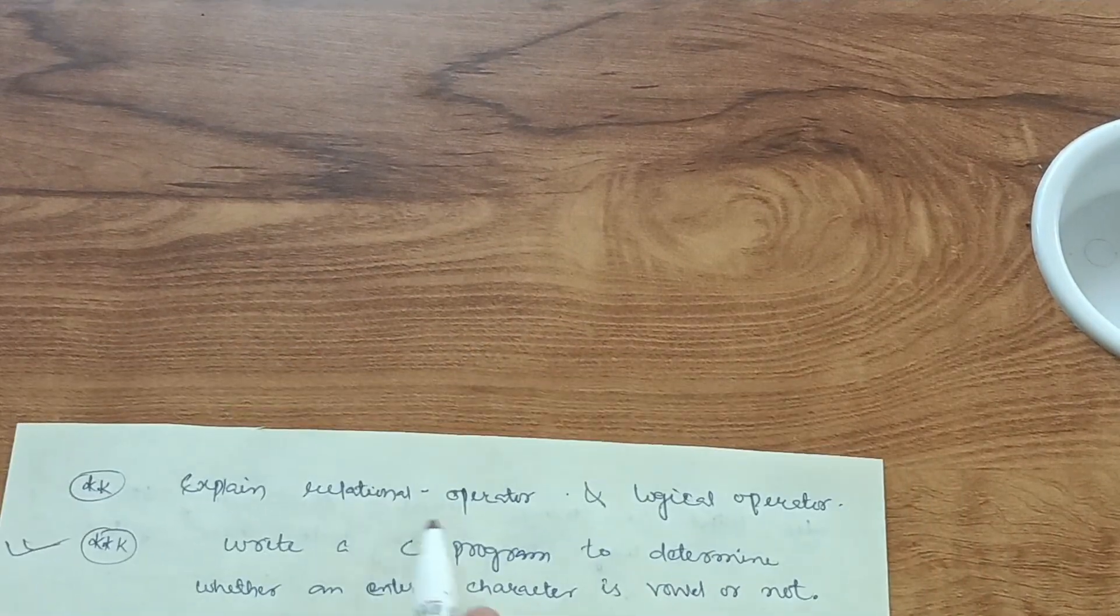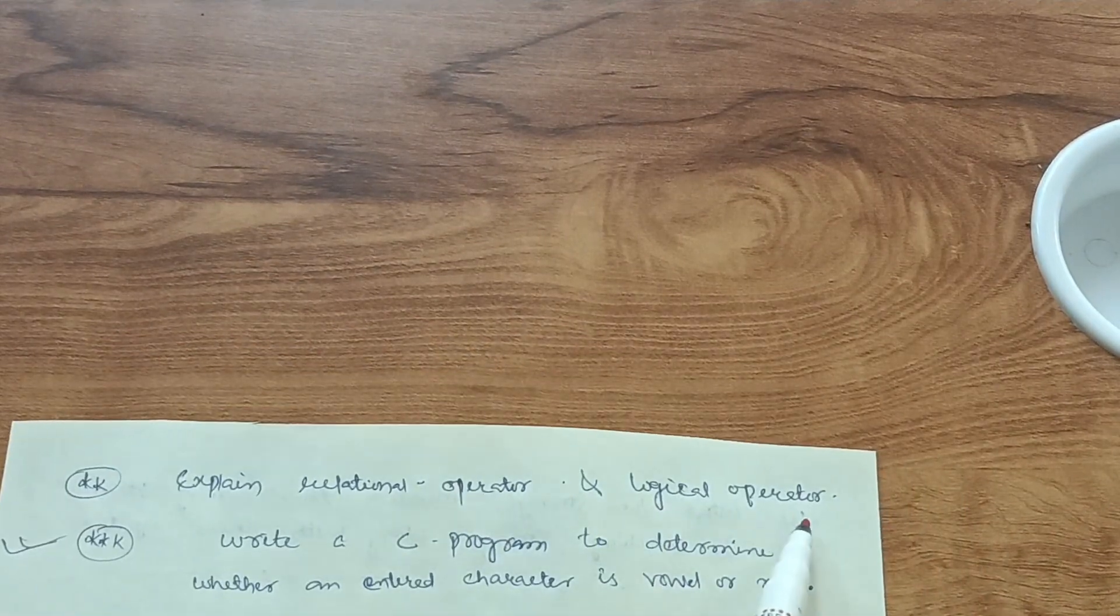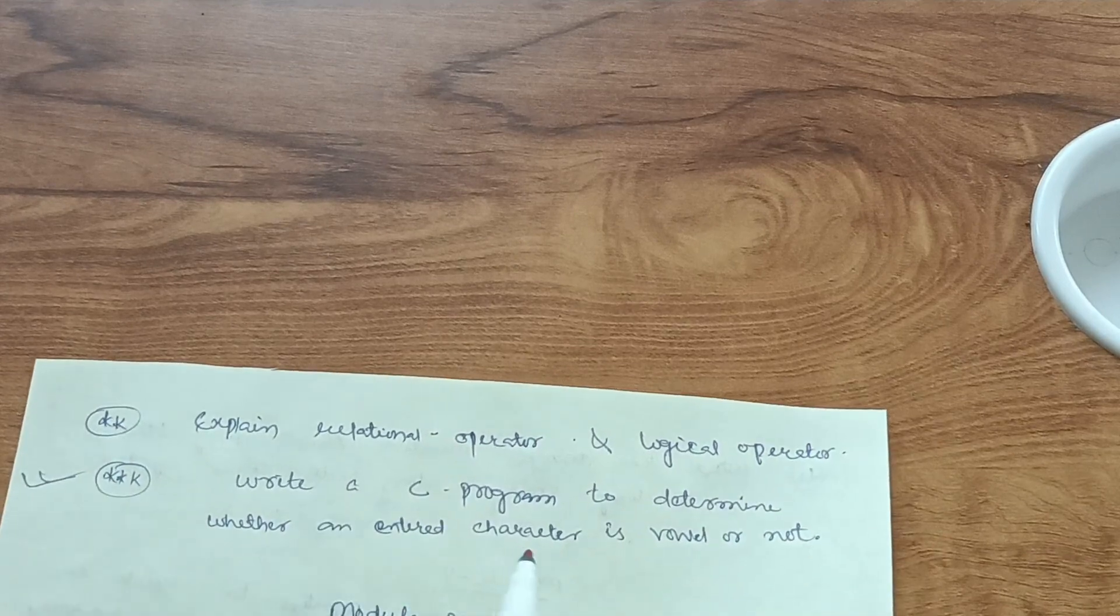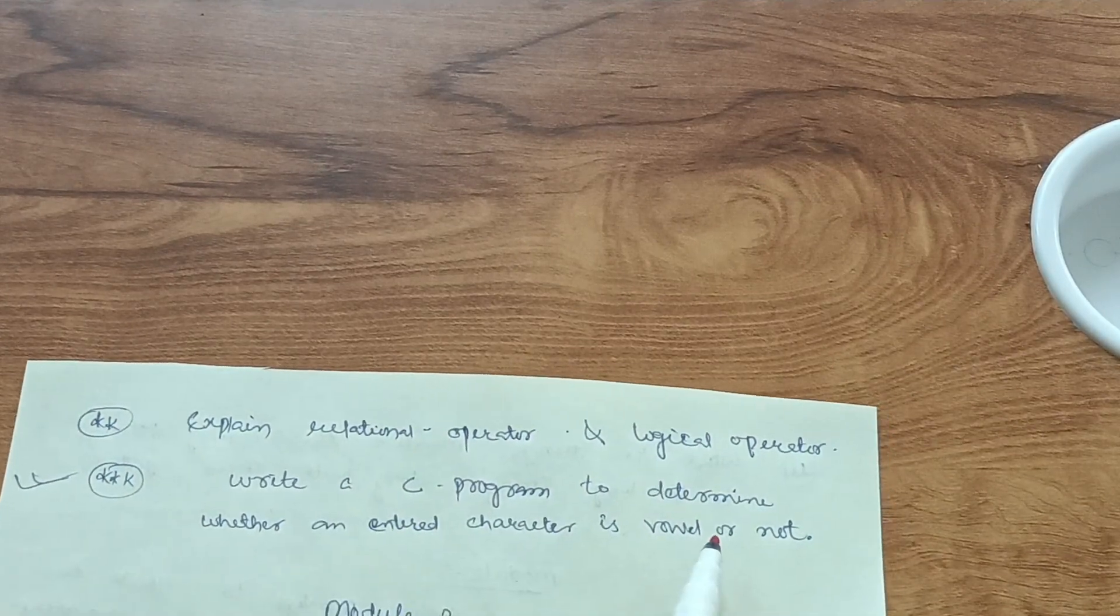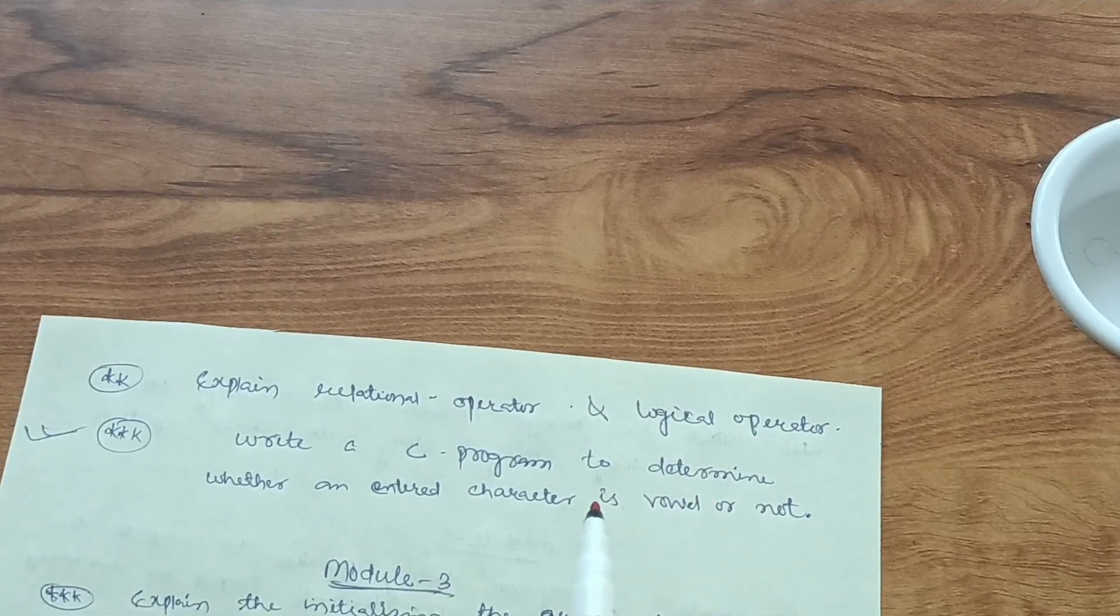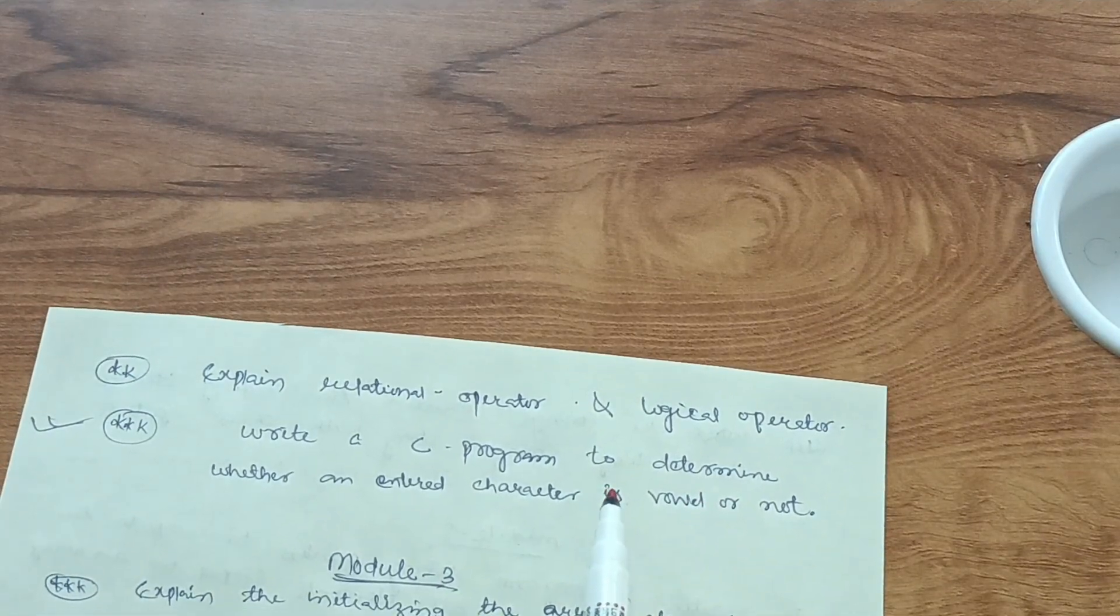Explain relational operator and logical operator. Then write a C program to determine whether an entered character is vowel or not. These are the programs which you have to cover in this particular module.